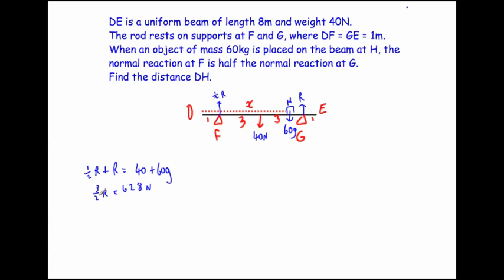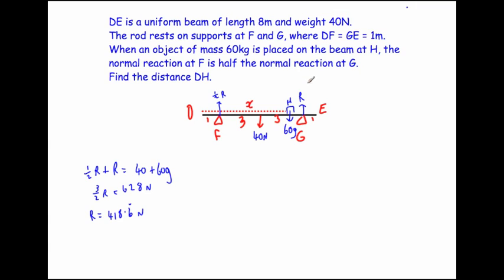Now let's find R. Dividing 628 by 1.5 gives R equal to 418.6 recurring newtons — that's the normal reaction at G. The normal reaction at F is half of that, which is 209.3 recurring newtons. So we've found our two normal reactions quickly.